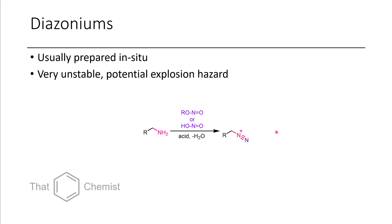The last leaving group we're going to talk about today is the diazonium. These are usually prepared in situ, especially in the case of alkyl diazoniums. Aryl diazoniums can be a bit more stable, but it depends. Alkyl diazoniums are very, very unstable, and you're usually preparing them in situ. If you did this reaction with hydrochloric acid, you can convert this to the alkyl chloride very easily. What happens is the nitrogen attacks the nitrogen of the nitrite, eliminates water, forming the diazonium. A stabilizing counter-ion such as tetrafluoroborate is necessary to isolate these, but most of the time you're just preparing them in situ.